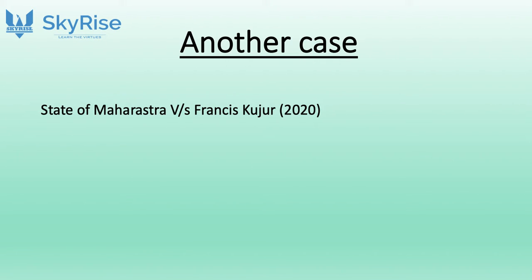The other case decided by the Supreme Court alongside was the State of Maharashtra versus Frankis Khajul, also decided originally by the Nagpur High Court and again overruled by the Supreme Court. In this case, the accused tried to open the pants of a five-year-old girl and held her hands. The High Court held that there was no sexual assault under Section 7 of the POCSO Act in this case as well.